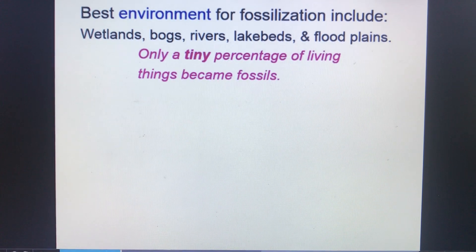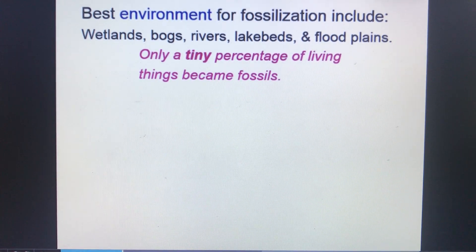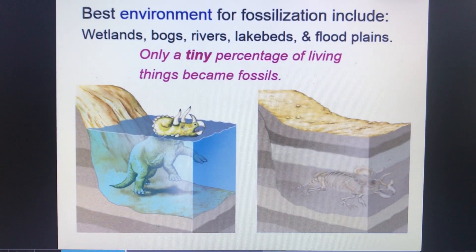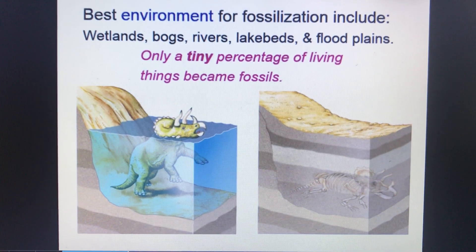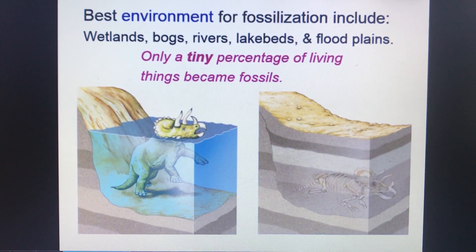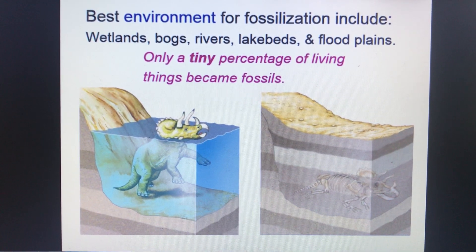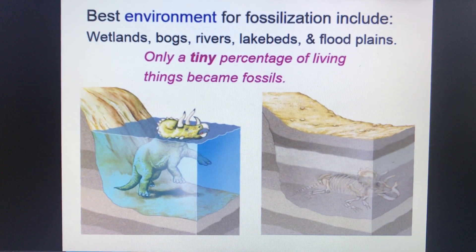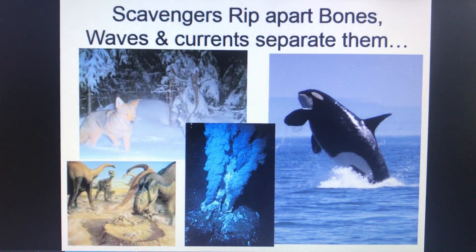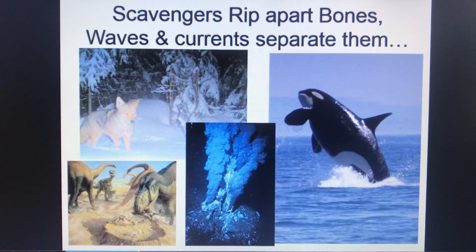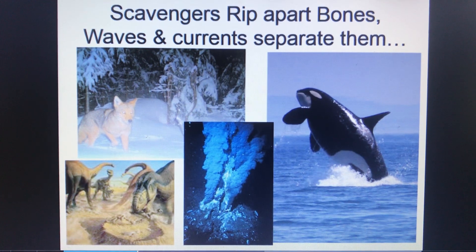The best environment for fossilization includes wetlands, bogs, and rivers. However, ask yourself why only a tiny percentage of living things actually become fossils. The reasons for that include scavengers, waves, and currents.